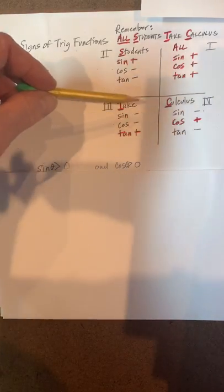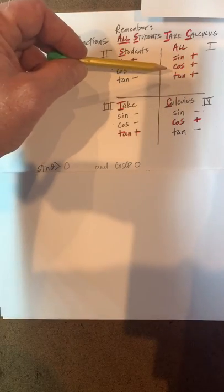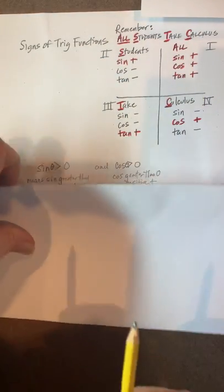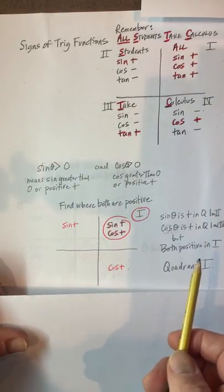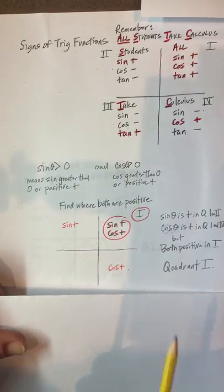We take a quick look here. It looks like just in quadrant one, so both are positive, and angle theta lies in quadrant one, and that's all it is.